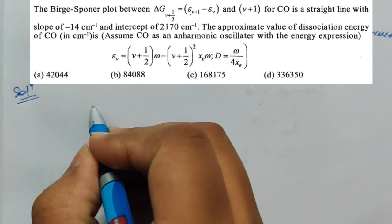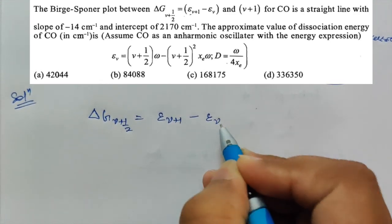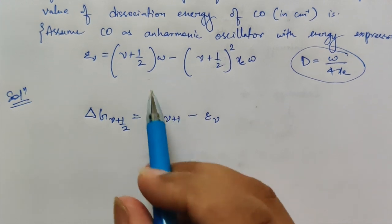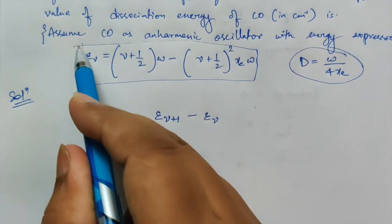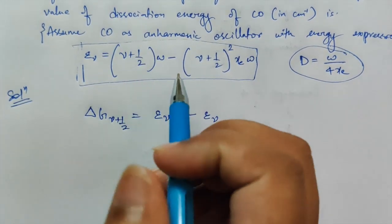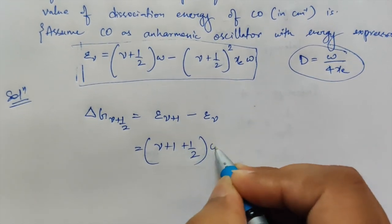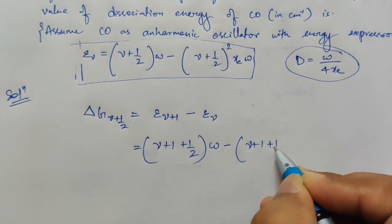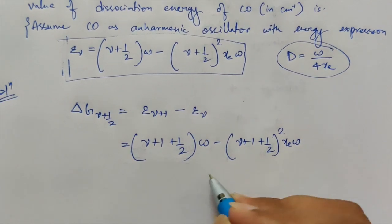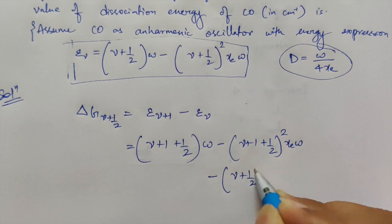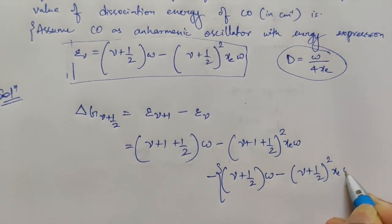As given in the question, ΔG(ν+½) = ε(ν+1) − ε(ν). So you have to subtract ε(ν) from ε(ν+1). To calculate ε(ν+1), put (ν+1) in place of ν in the energy expression. So ε(ν+1) = (ν+1+½)ω − (ν+1+½)² Xeω, and then you subtract: minus [(ν+½)ω − (ν+½)² Xeω].